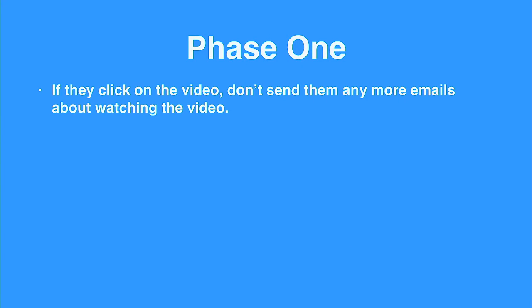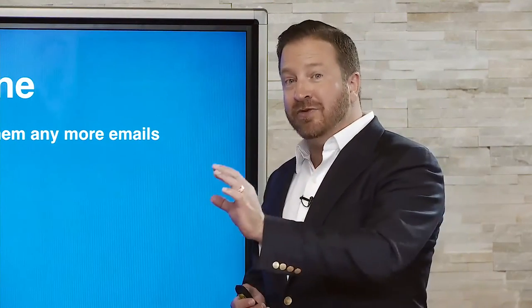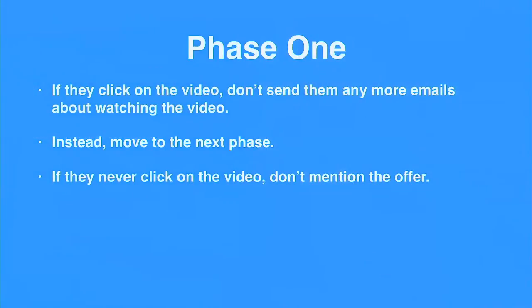Continuing in phase one: if they click the video, you don't want to send them any more emails in the click sequence. So if it's day one, email one, and they click the video, we're not going to email them nine million more times saying 'go click a video they've already watched.' Instead, they're moved to the next phase as soon as they click. If they never click, we're not going to email them anymore or mention the special offer.